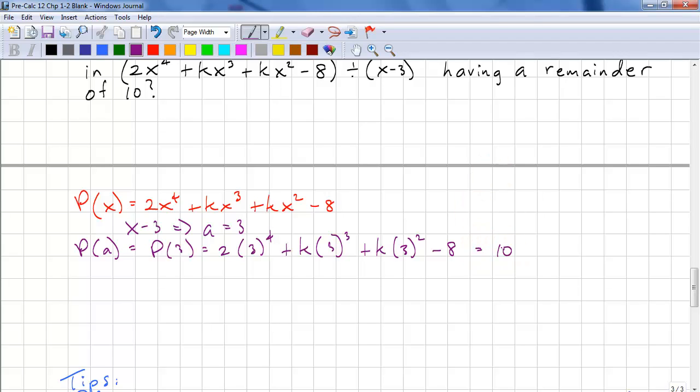And we know that the remainder is 10, so this must equal 10. Let's simplify this. 2 times 3 to the power of 4, so that's 2 times 81, plus k times 3 cubed, that's 27, plus k times 3 squared, that's 9k, minus 8 equals 10.